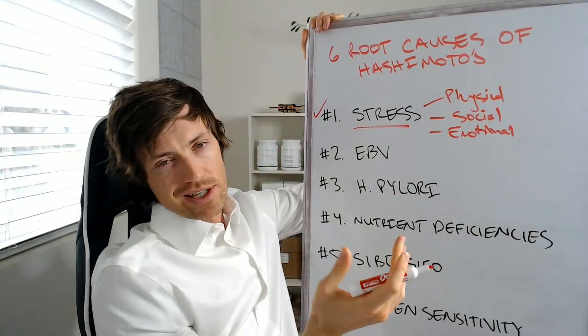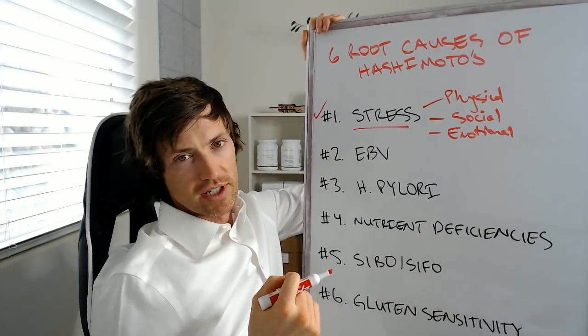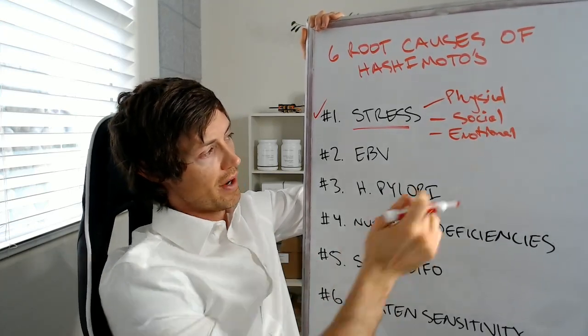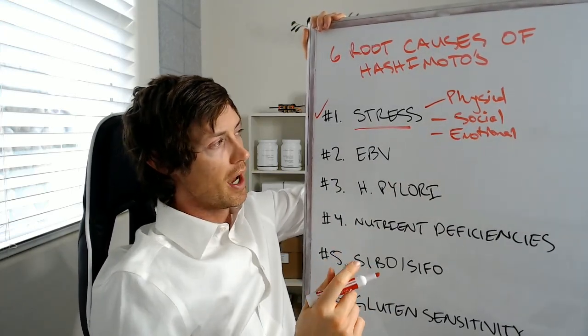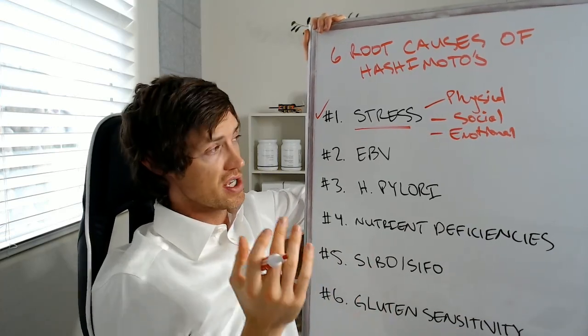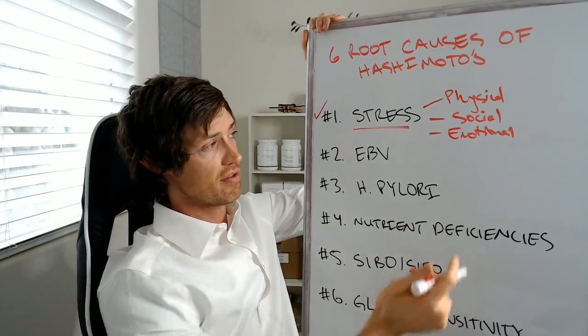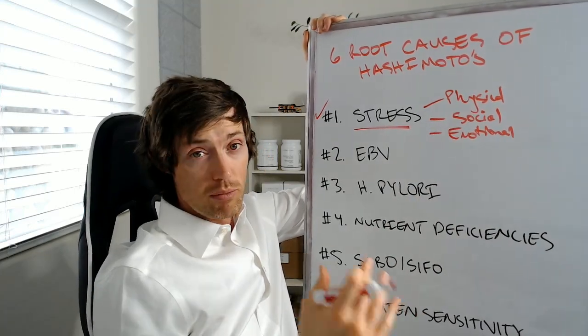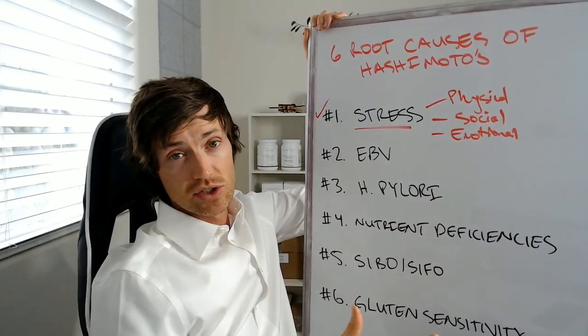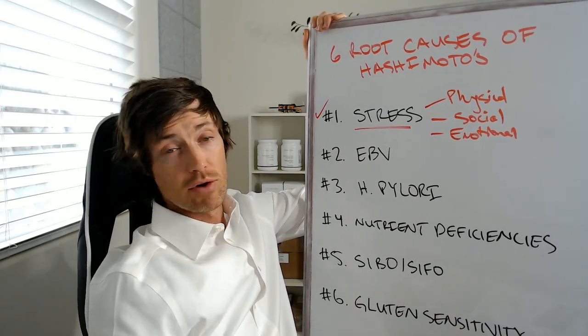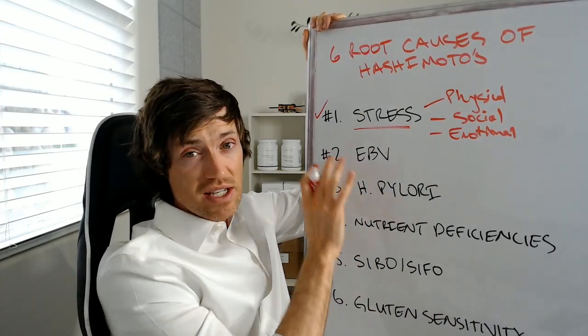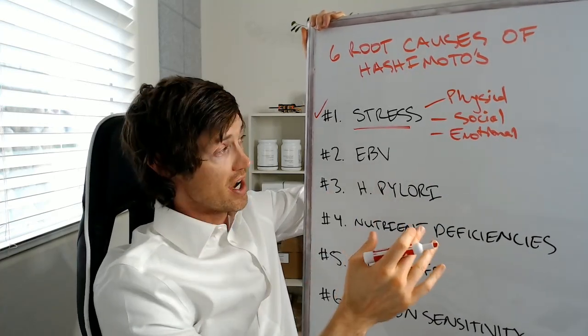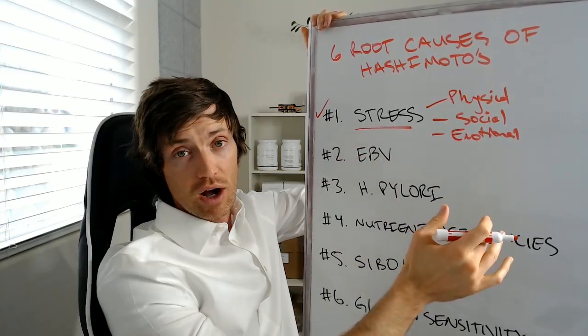So social would be things related to work, driving in your car, getting in a car accident, the actual social stress associated with that, or that would also potentially be under emotional, problems with spouses, problems with relationships, that sort of thing that falls under social. And then emotional would be anything that is a problem with you internally. So how you're reacting to relationships, the inability to put up boundaries, that sort of thing. So all of these things are associated with stress and stress itself can be a cause of Hashimoto's.